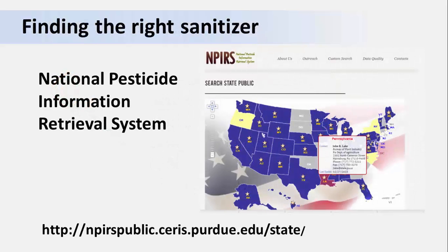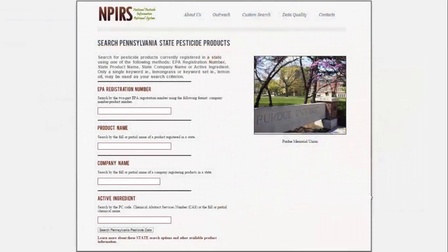Finding a source for the right sanitizer for your operation is not always easy. One information resource is the National Pesticide Information Retrieval System. You can follow the link shown at the bottom of the video, or just do a search for NPIRS. You can type in a product name and it will list manufacturers of those products for you to contact. It's really important to establish a relationship with your chemical supply person. You can also talk to your local farm store and ask them if they can stock a specific product you are looking for.